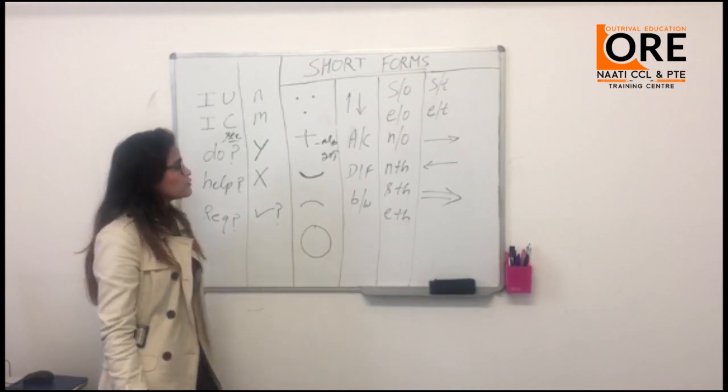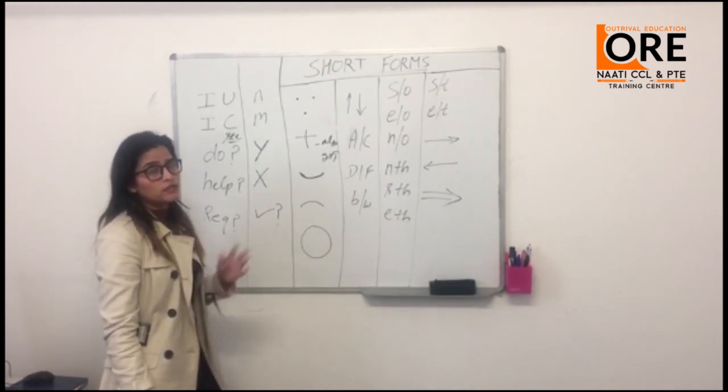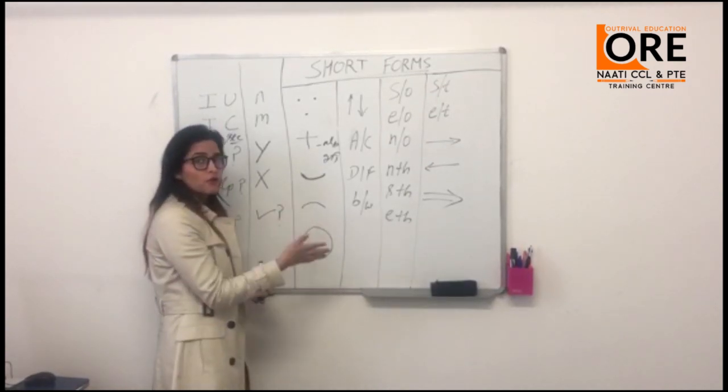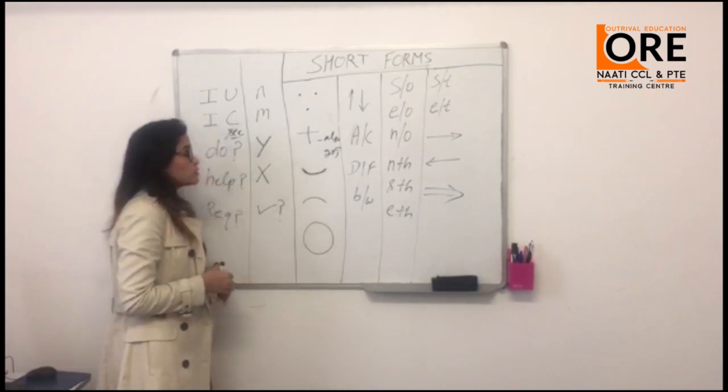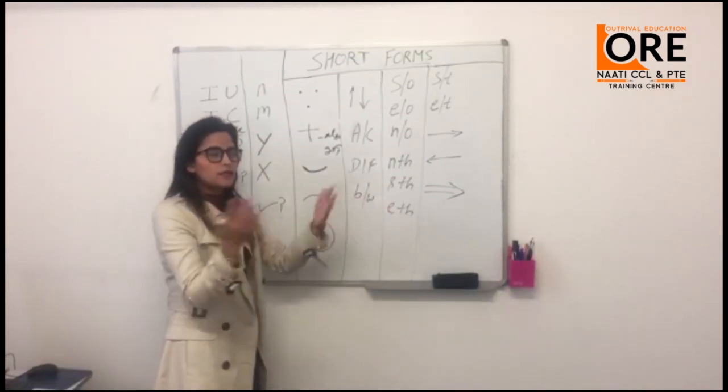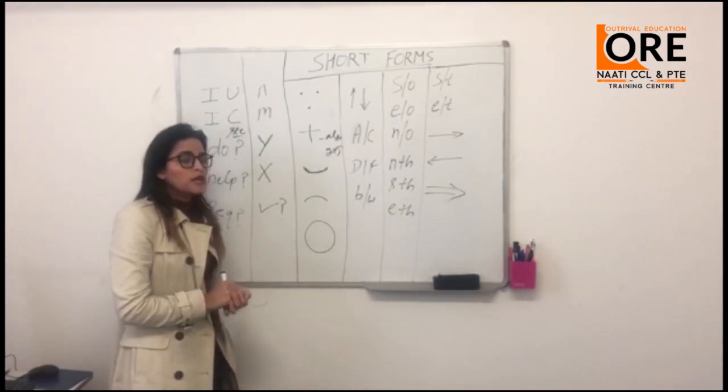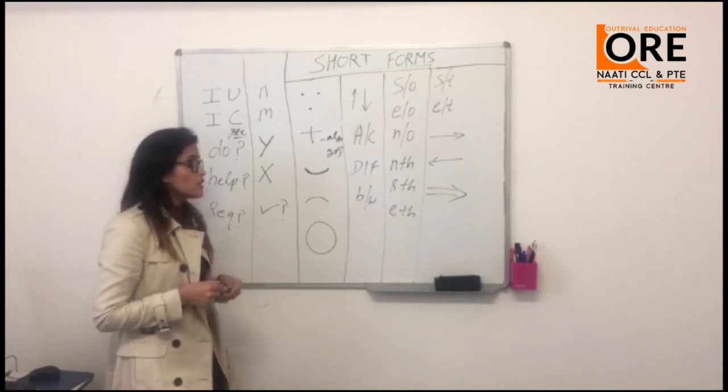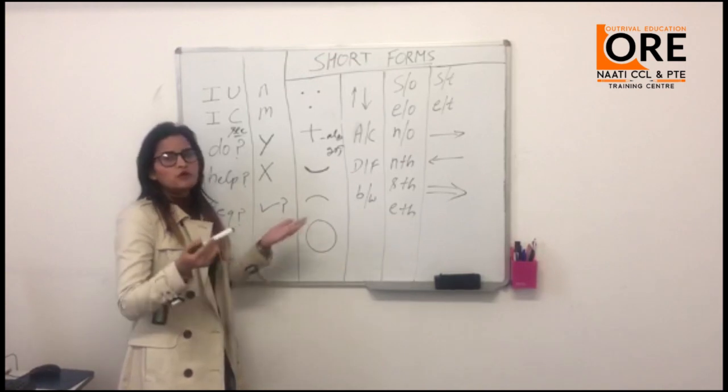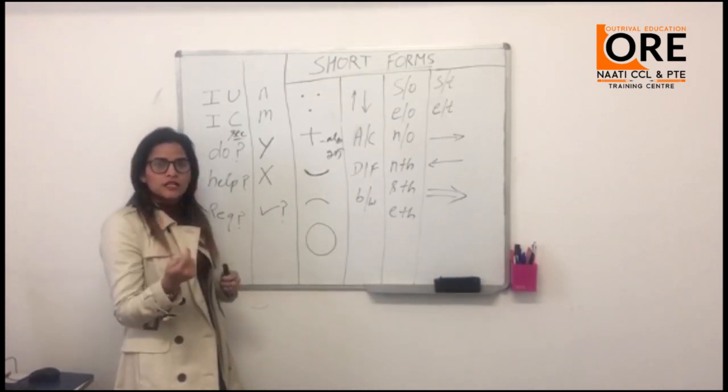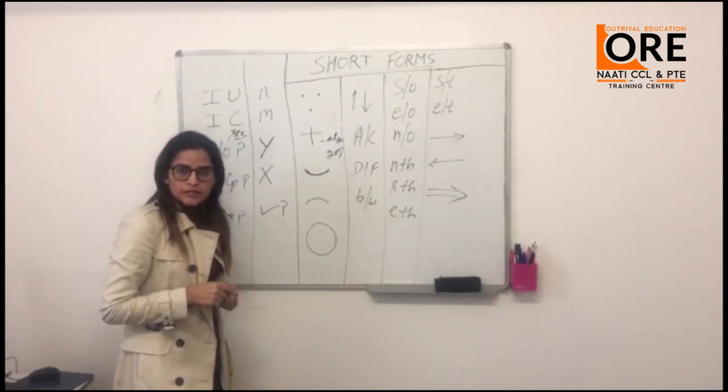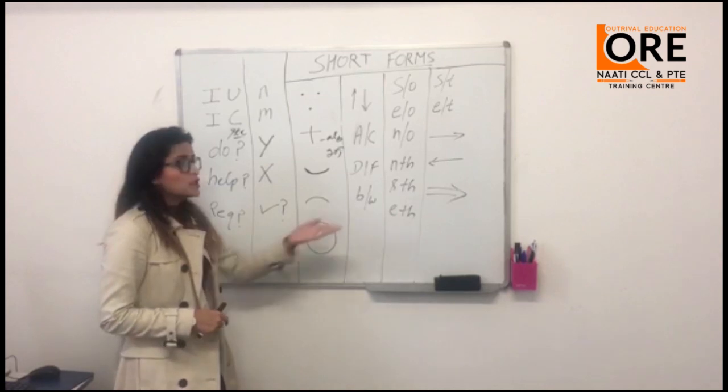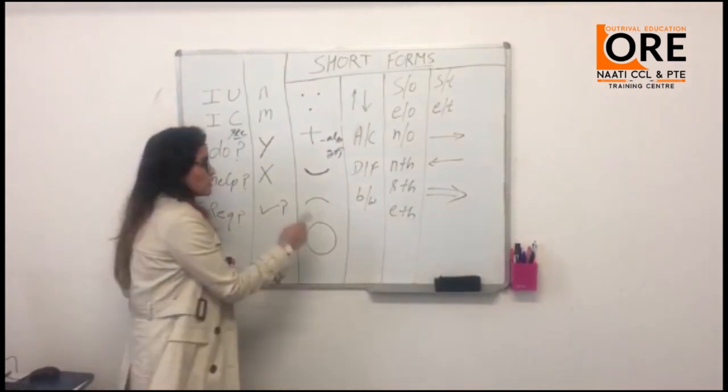This is very important. Here in Australia, whenever they tell you anything, they won't tell you fixed - whether it's in numbers or general statement. They tell you probability kind. So this meaning is: circle means about, around, approximately - 'lag bhag, taqriban, aas paas'. This is used in many contexts. Like when you ask transport people 'how many dollars to go to city', they say 'to go to city, about 11 dollars will cost'. They don't always tell you fixed amount sometimes. They say 'lag bhag, about 11 dollars'. If you go to Centrelink, they say 'for one child, around 500 dollars' - about. They will never give you exact amount. Or they say 'my house is near Woolworths' - meaning 'aas paas', near Woolworths.